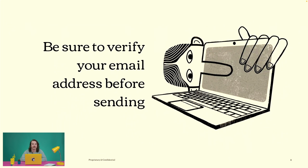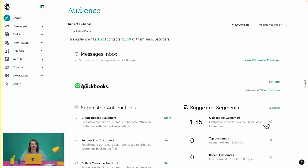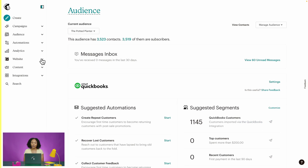One more thing to keep in mind before you send email campaigns: you'll need to verify your domain in Mailchimp. When we say verify your domain, we essentially mean that you confirm the address you're sending from. For example, we use a fictional plant business in our webinars called the Potted Planter. That business sends emails from the address amelia@thepottedplanterla.com. This verification process ensures that we own that email address and helps prevent someone else from using it.